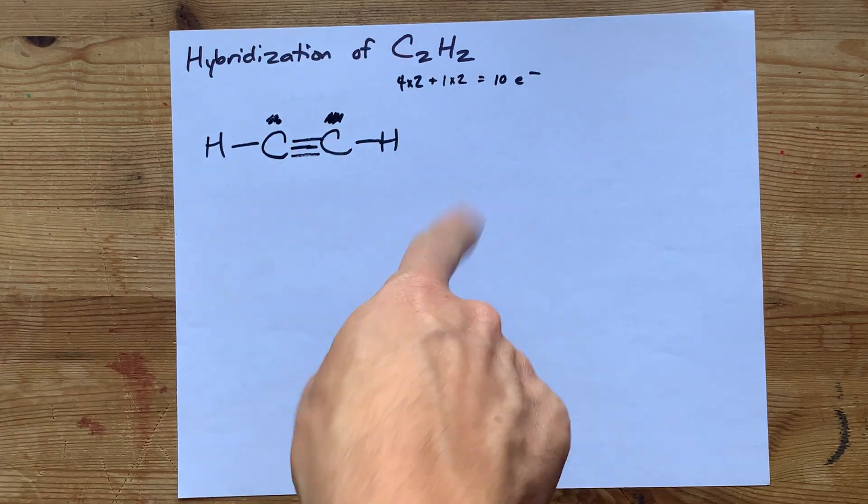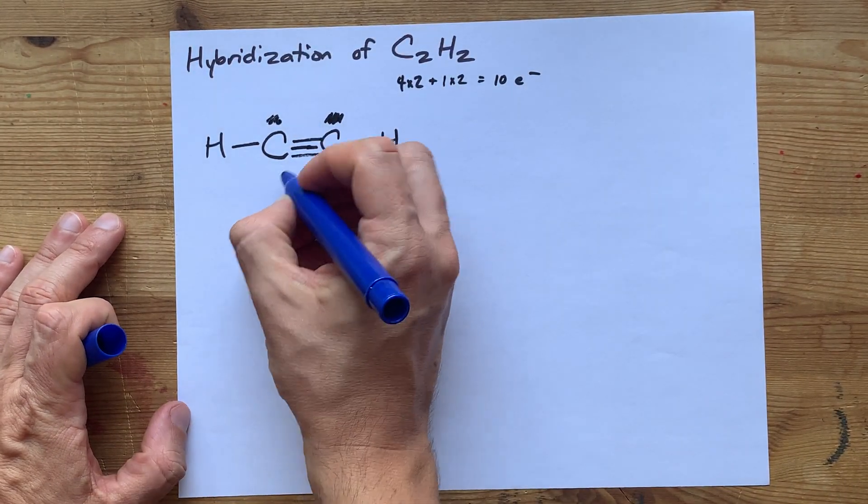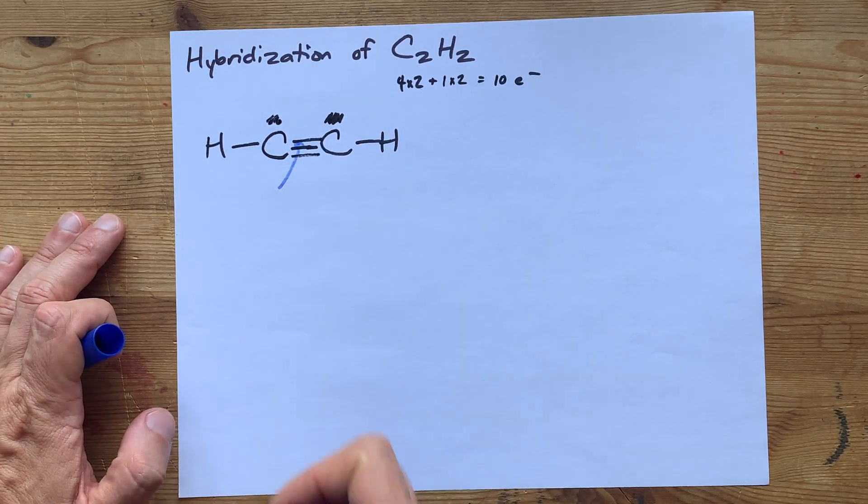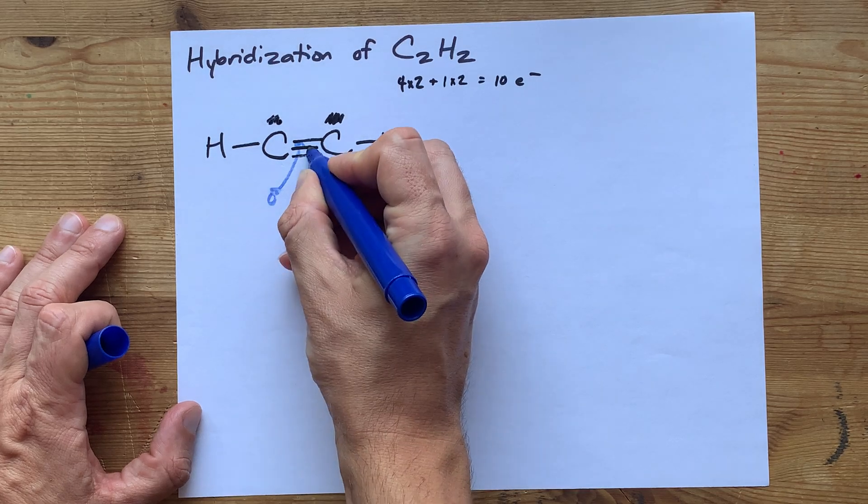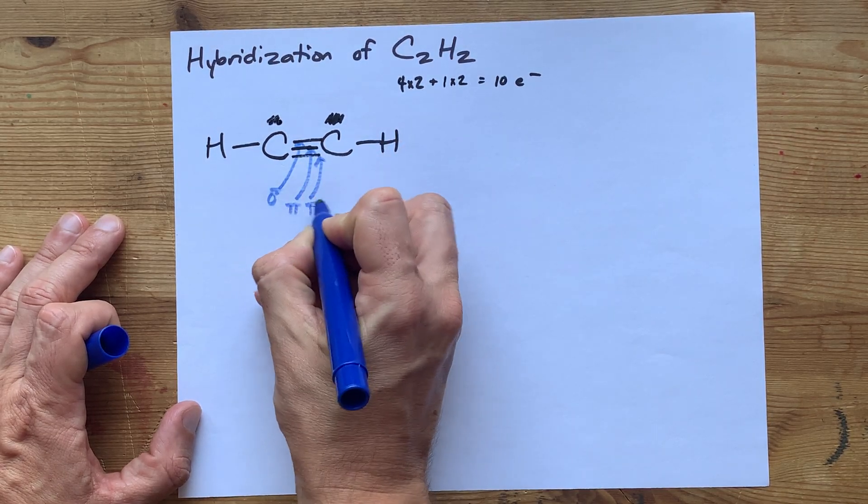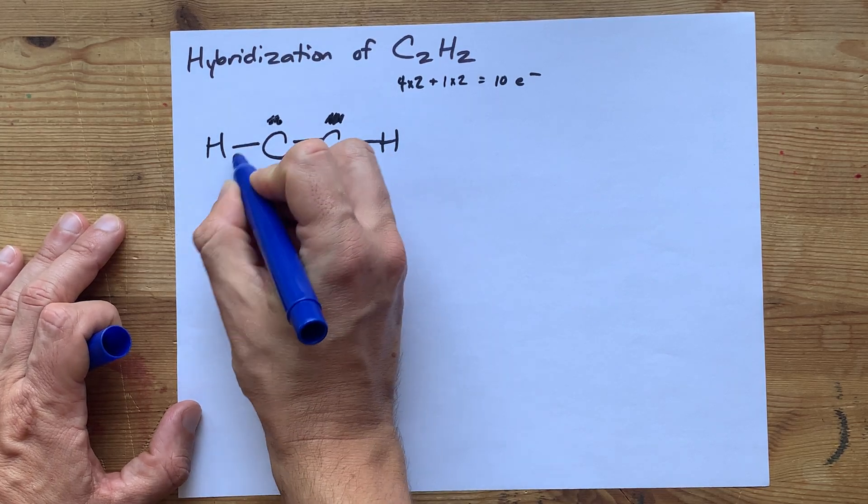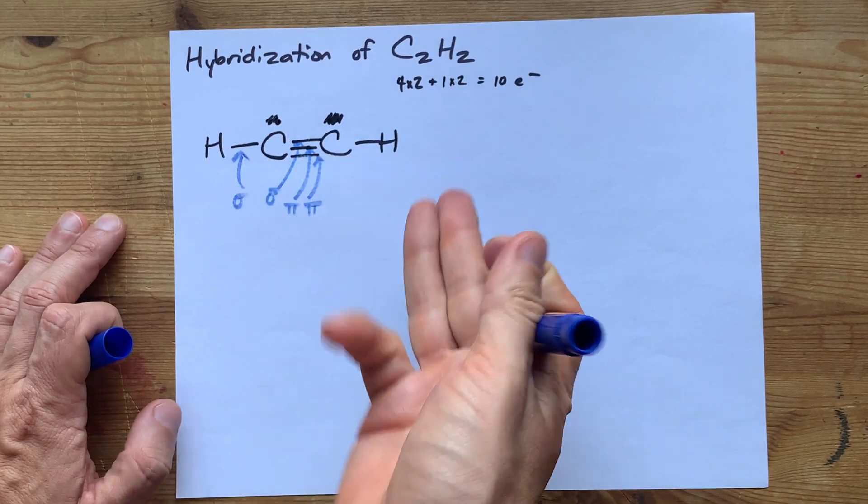Now, we can figure out the hybridization. Here's how I do that. The first bond between any two atoms is a sigma bond. The next bonds between those same two atoms are pi. This is a sigma bond because there's only one bond between them, and the first bond between any two atoms is sigma.